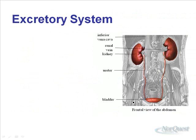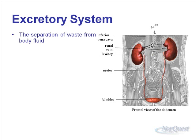Here's a picture of our excretory system — a frontal view of the abdomen. We have the inferior vena cava coming down; in this picture the aorta has been removed, but the descending aorta has one branch going into each of our kidneys. We have two kidneys. There's a renal artery going into each kidney, and the renal vein carries blood back to the vena cava. The proper excretory system consists of the kidneys, the ureter, and the bladder. Its purpose is to separate waste from body fluid and remove the waste from the body.